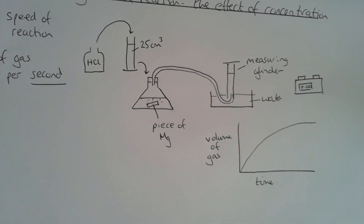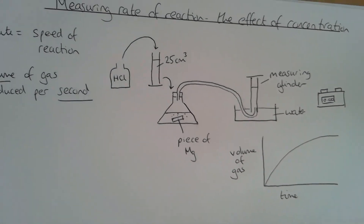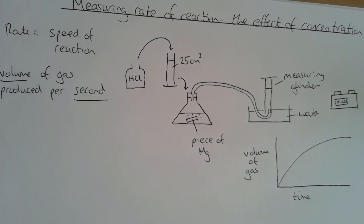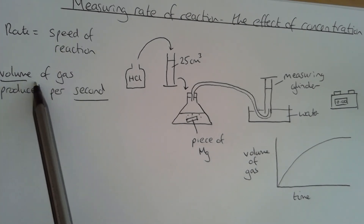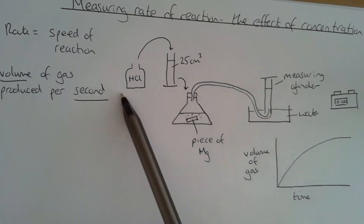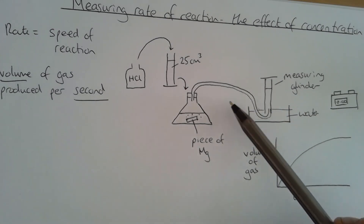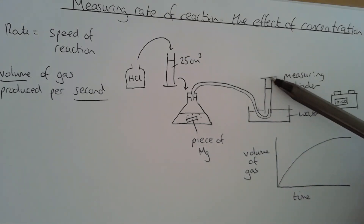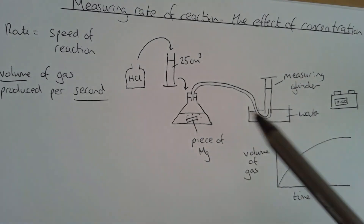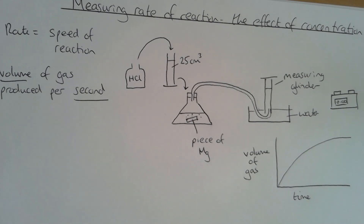We're going to talk about that in more detail in a future lesson. What we're really interested in today is that we have an understanding of how this experiment works. So just as a review: we're looking at the rate of this chemical reaction, and the rate is the speed of the reaction. We need to work out how much hydrogen gas is being produced every second. We're using an upturned measuring cylinder filled with water to work out the volume of gas being produced, and a stopwatch to measure the time intervals — measuring the volume produced every 10 seconds.